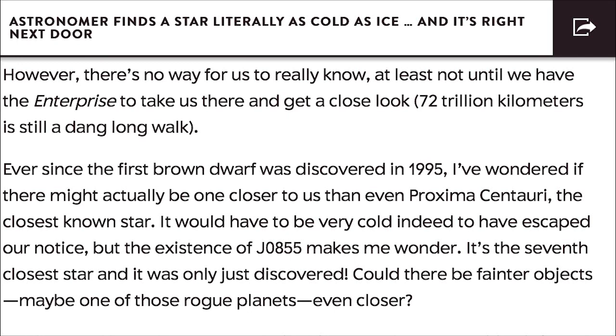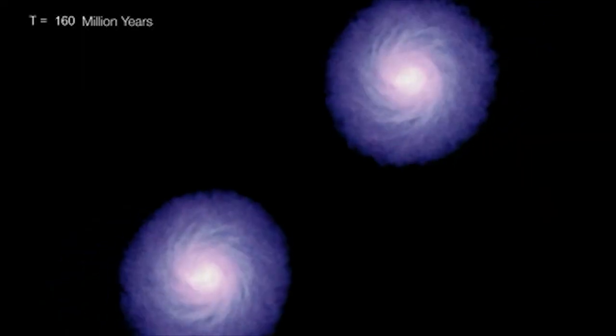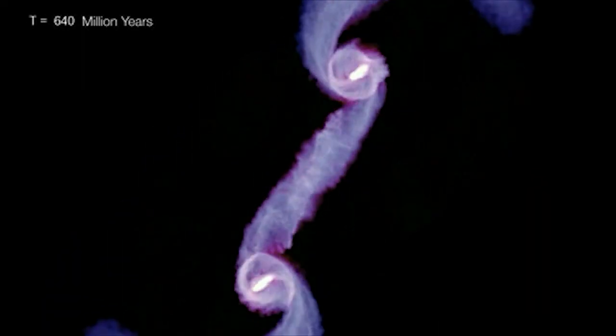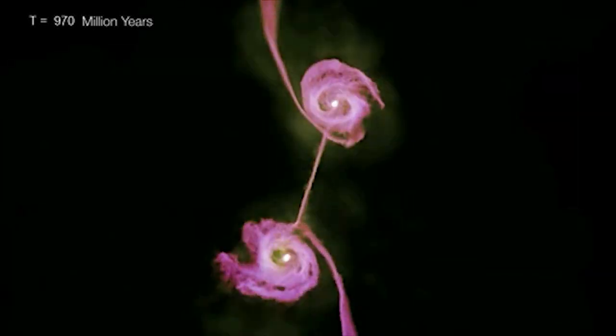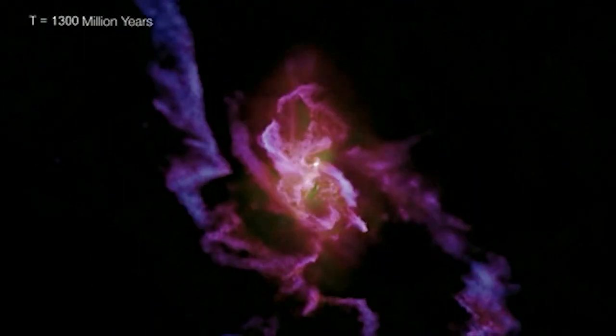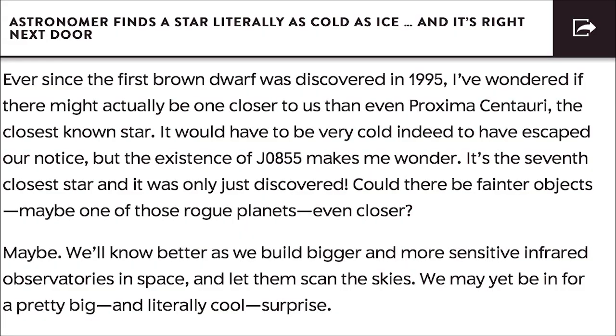Am I the only one that would take the Yamato over the Enterprise, man? I mean, that's Kirk's stuff, bro. No, I guess I'm wrong. 72 trillion kilometers is still a dang long walk. Ever since the first brown dwarf was discovered in 1995, I've wondered if there might actually be one closer to us than even Proxima Centauri, the closest known star.